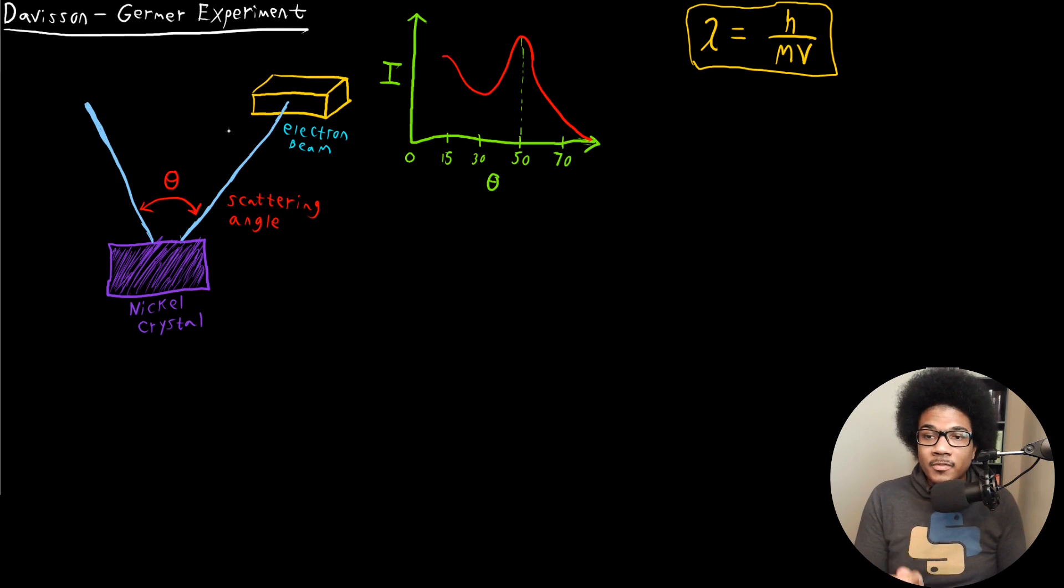So this is a rough sketch of what their experimental setup looked like. They have an electron beam that's impending on a nickel crystal. And once it hits that nickel crystal, it's going to interact with the lattice of nickel atoms, and it's going to scatter. There's going to be a diffraction pattern.